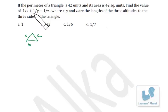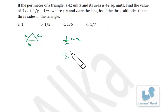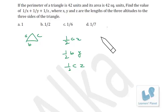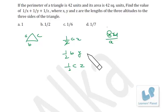The altitudes are x, y, and z. If the base is a, the area of the triangle is (1/2)×a×x. Similarly area = (1/2)×b×y and (1/2)×c×z. In all cases the area is 42.